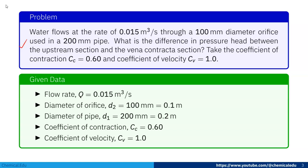Given data: flow rate Q = 0.015 m³/s, diameter of orifice d₂ = 100 mm = 0.1 m, diameter of pipe d₁ = 200 mm = 0.2 m, coefficient of contraction Cc = 0.60, coefficient of velocity Cv = 1.0.